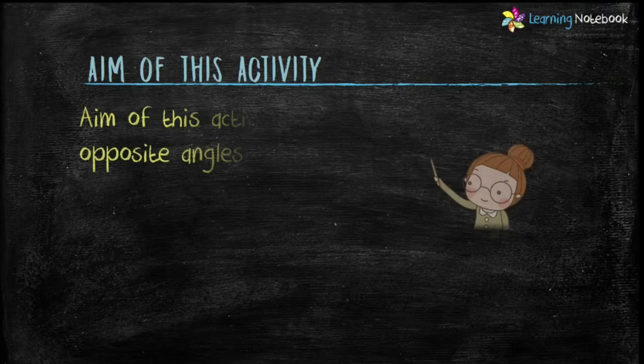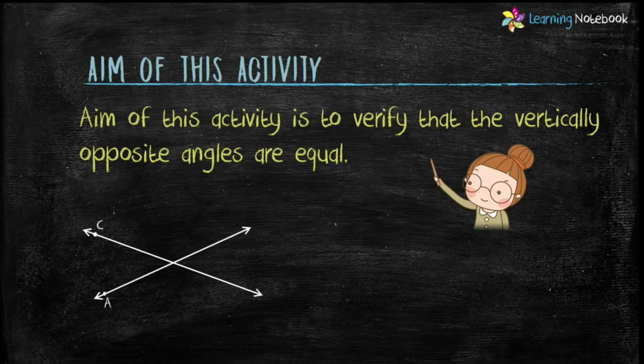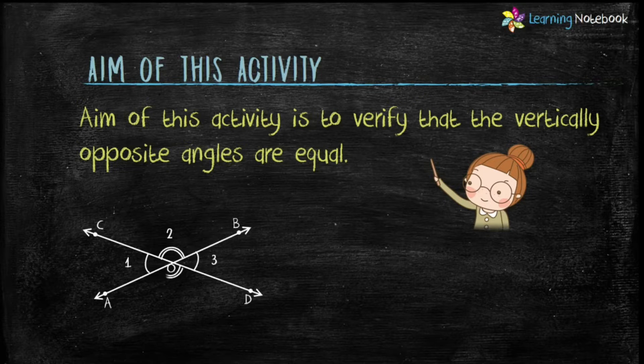Aim of this activity is to verify that the vertically opposite angles are equal. This means angle 1 equals angle 3 and angle 2 equals angle 4.